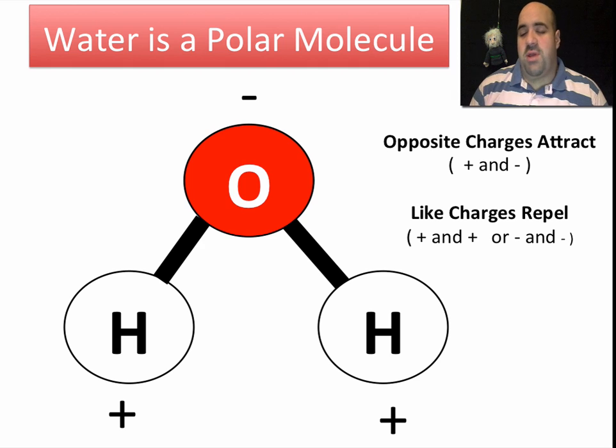And we know that there are some general rules in science. Opposite charges attract. A plus and a minus charge will attract. And like charges repel. Just like two sides of a magnet, two north poles of a bar magnet will repel one another. A north and a south pole will attract together. So water has a plus side and a minus side.